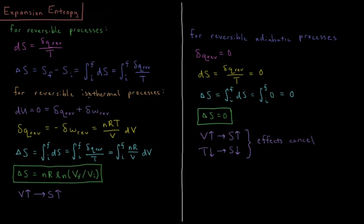For reversible isothermal processes, the energy change of the system equals zero, which is also equal to the heat plus the work, dQ_rev plus dW_rev. If we rearrange this for the heat, dQ_rev equals negative dW_rev when the change in internal energy is zero.